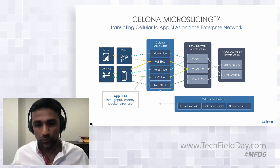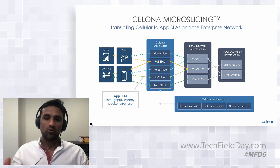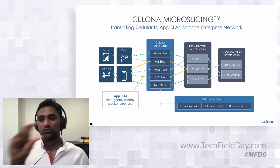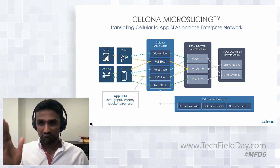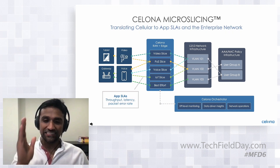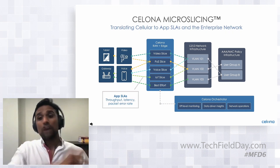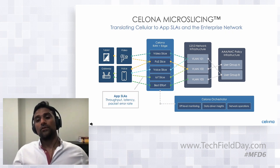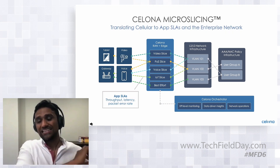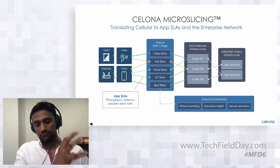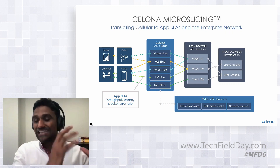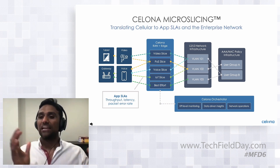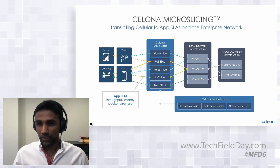When you create a micro slice on the Salona orchestrator, it takes into account the application that is part of that micro slice and the device groups that will be running as part of it, and actually creates a resource slice for that application and those devices both on the RAN as well as on the core network. So within the context of the private mobile network, if you're running a computer vision application with a video slice, you can ensure a very specific latency is maintained.